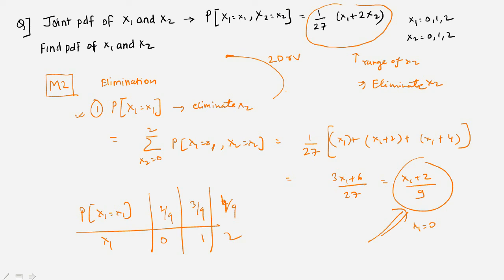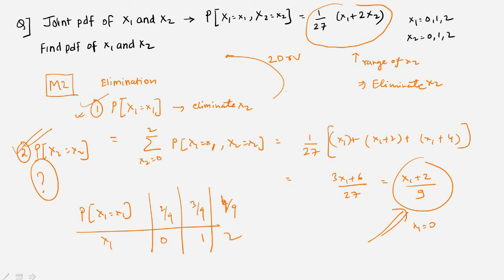Now try applying the elimination method to find P(X2=x2) as well, and check your answer against the result from Method 1. If you get the correct answer, leave a comment saying 'I got the answer.' See you in the next video.